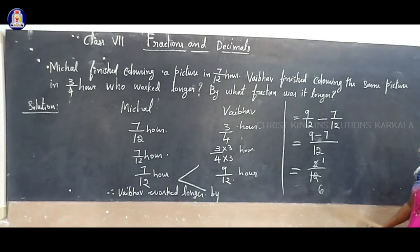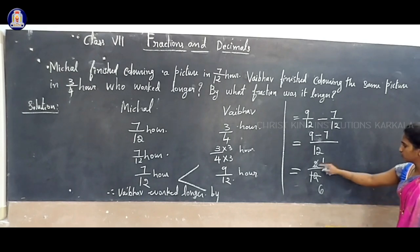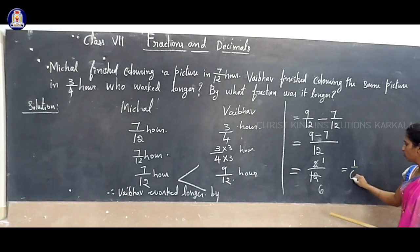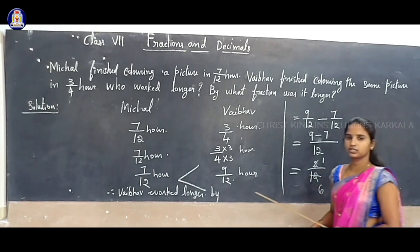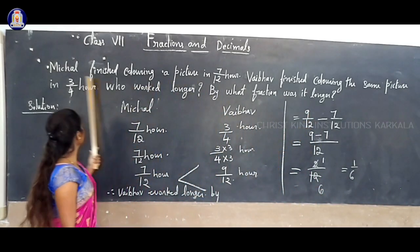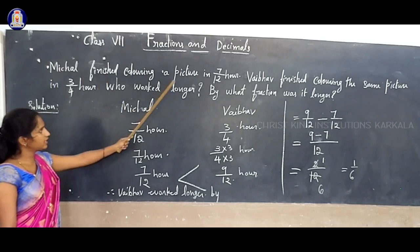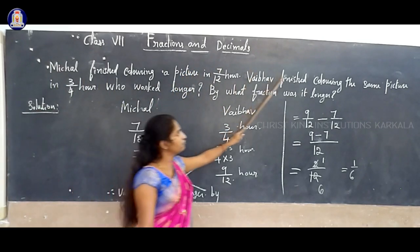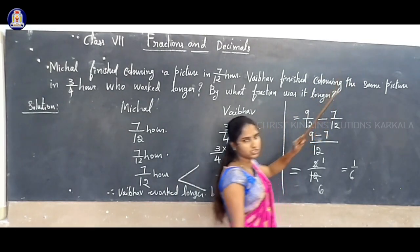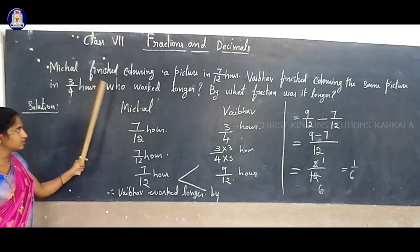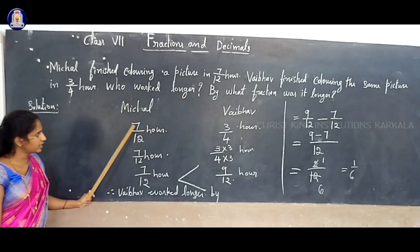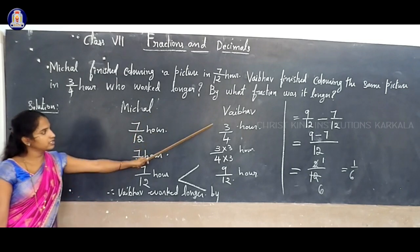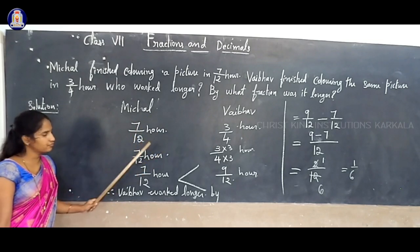We can simplify 2/12. So 2/12 — we simplify and the answer is 1/6. So what fraction was it longer? It is 1/6 fraction. Michael finished coloring a picture in 7/12 hour and Waibo finished coloring the same picture in 3/4 hour.